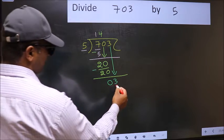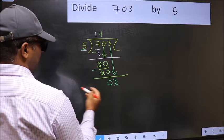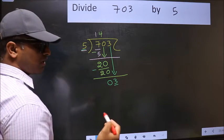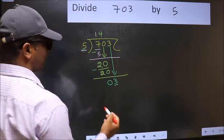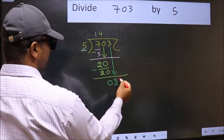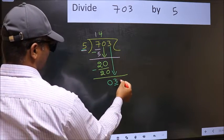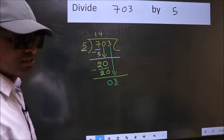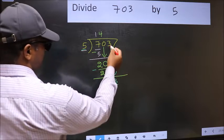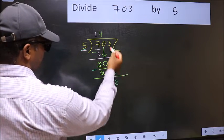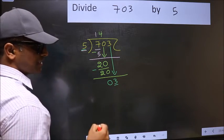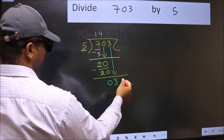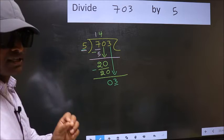Here we have 3 and here 5. 3 is smaller than 5. So what many do is they directly put dot and take 0, which is wrong. Why is it wrong? Because just now you brought this number down. And in the same step, you want to put dot and take 0, which is wrong.